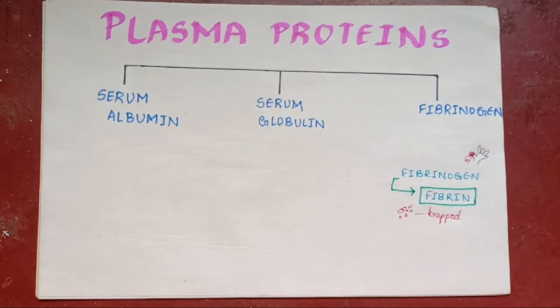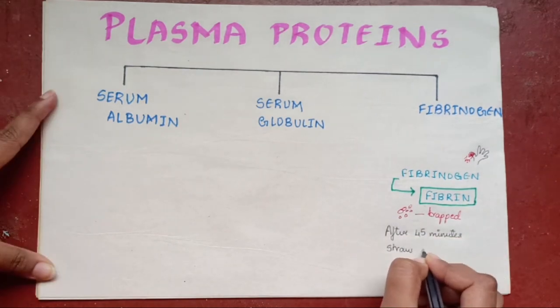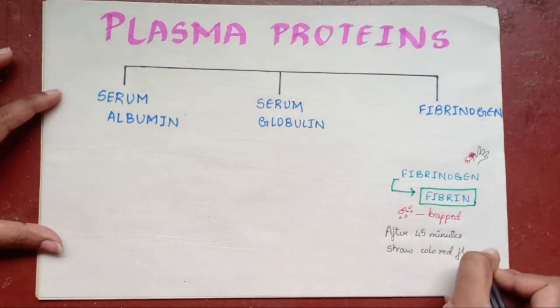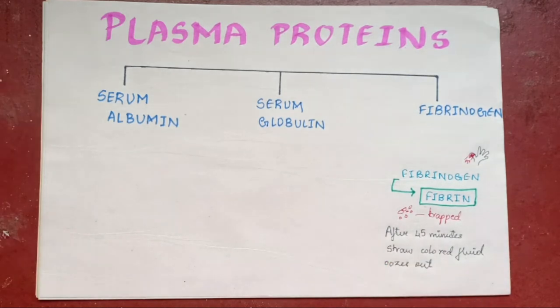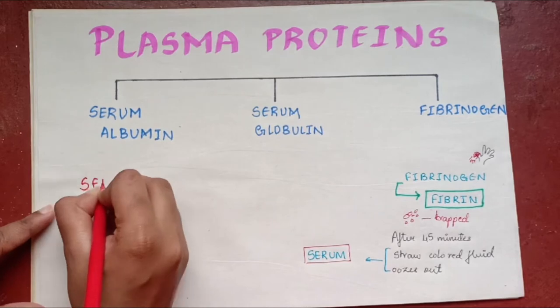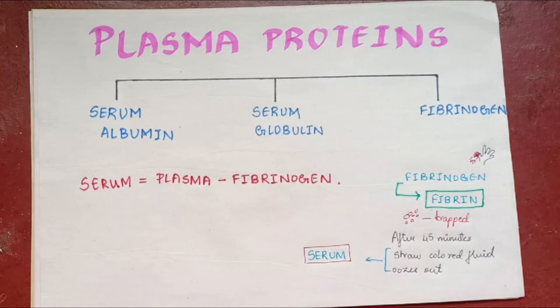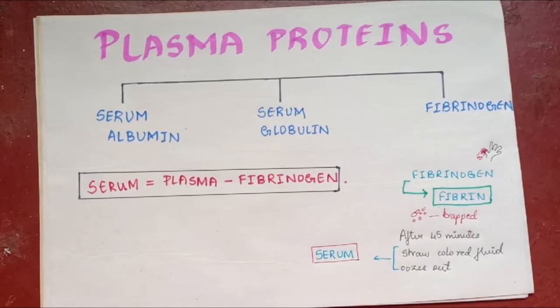After about 45 minutes, a straw color fluid oozes out of the blood clot. This fluid is called serum. The serum is different from plasma in its protein content. Serum contains only albumin and globulin because fibrinogen is absent. So basically, serum is plasma minus fibrinogen.